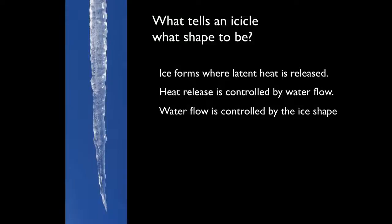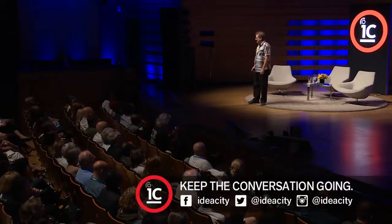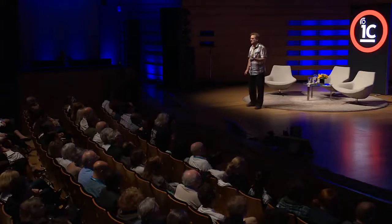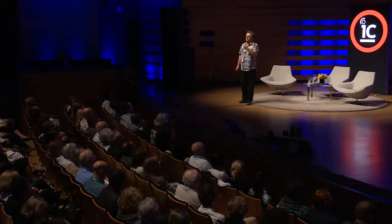The water flow controls where the heat is released, and hence where the ice will form. That water is flowing over a complicated shape that's evolving, so where the water flows is controlled by the shape, which depends on where the ice forms. Now you see we have a problem. In physics you have a cause and an effect, but here we have a cause and effect that goes back to the cause again — a feedback loop. An icicle's distinctive shape comes as an emergent property of a feedback loop between shape and flow.